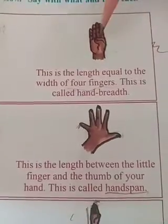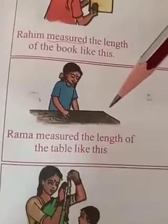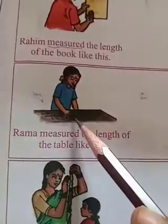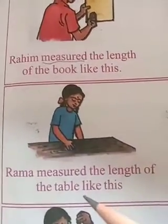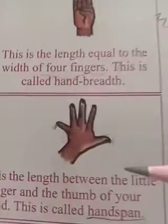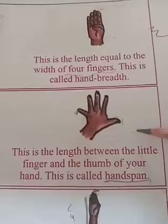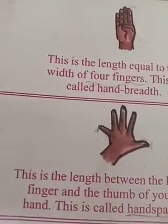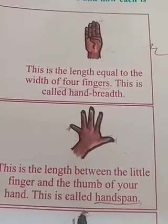Or, this is called what? H-A-N-D. Hand. B-R-E-A-D-T-H. Hand breadth. Next one here. This girl's name is Rama. She measured the length of the table, like this only. Observe this hand. In previous class 2 I already explained this. This is the length between the little finger and the thumb finger. This is called what? Hand span. H-A-N-D-S-P-A-N. Hand span.